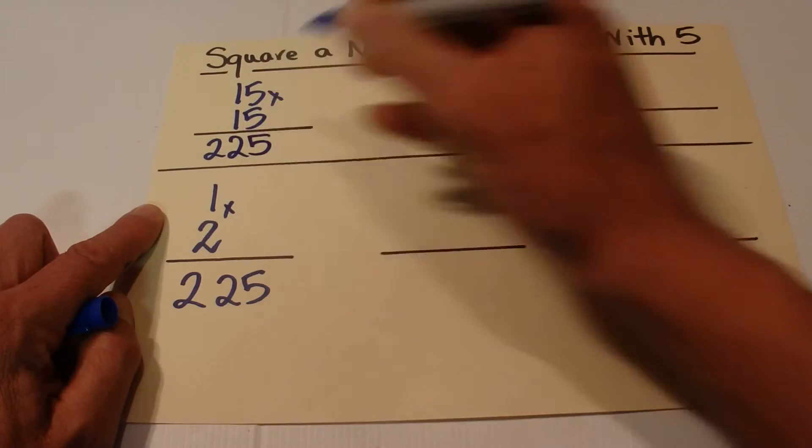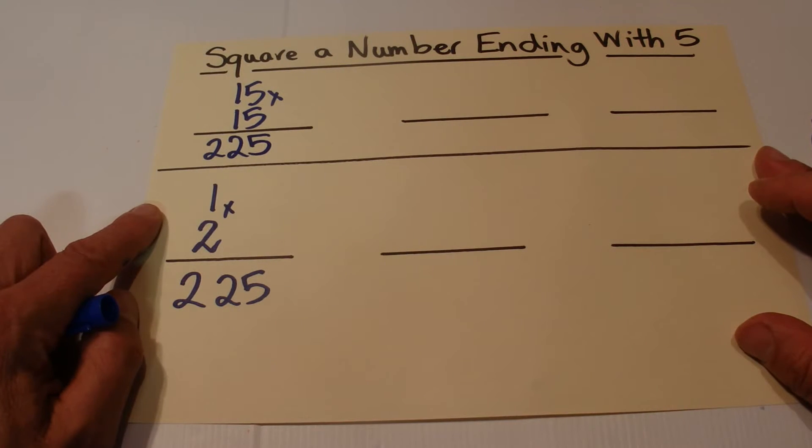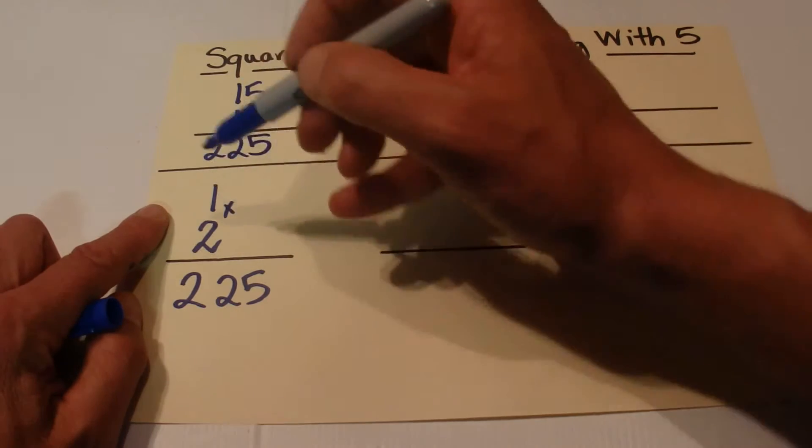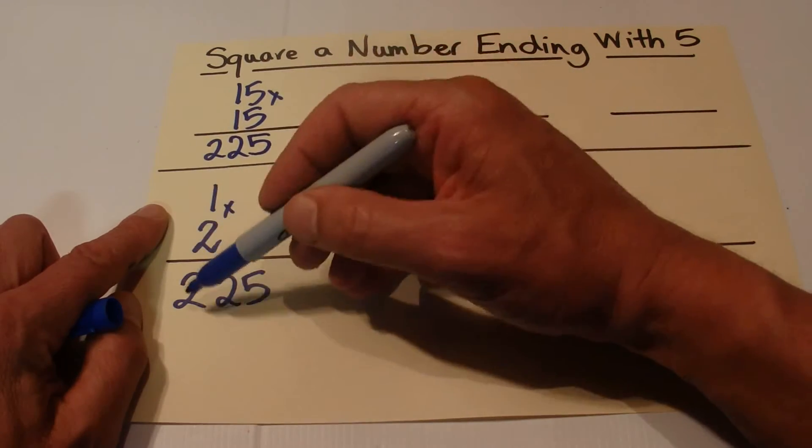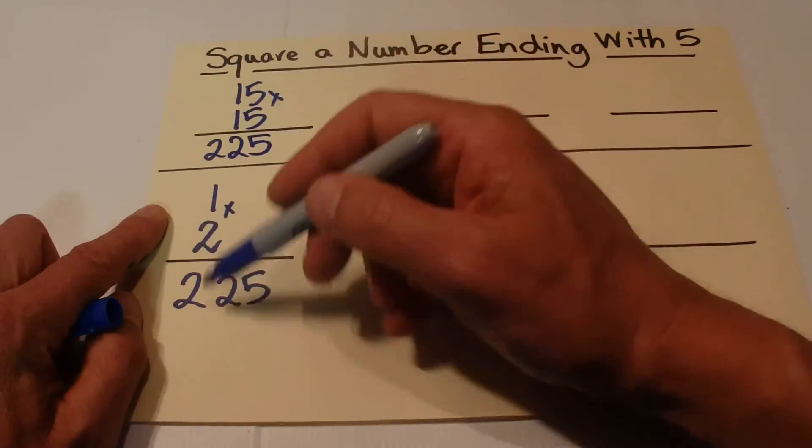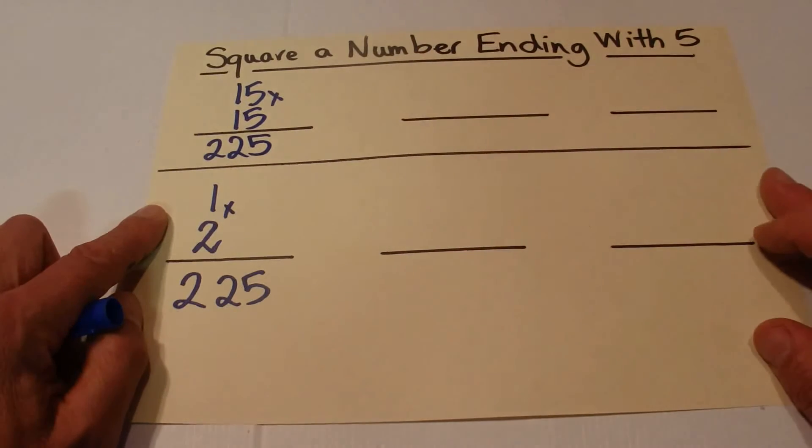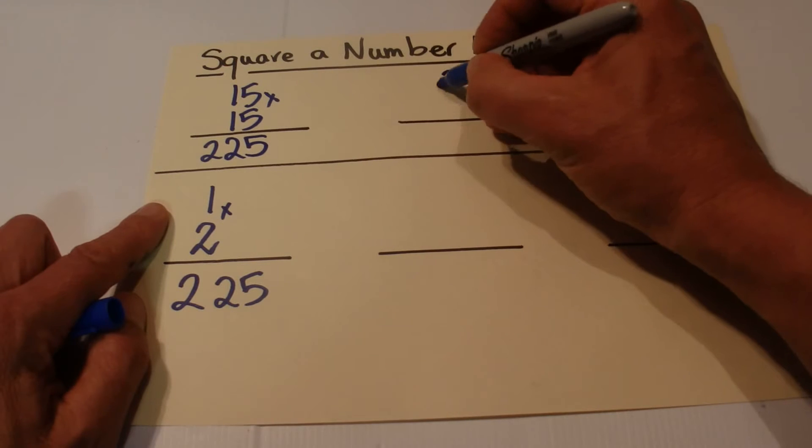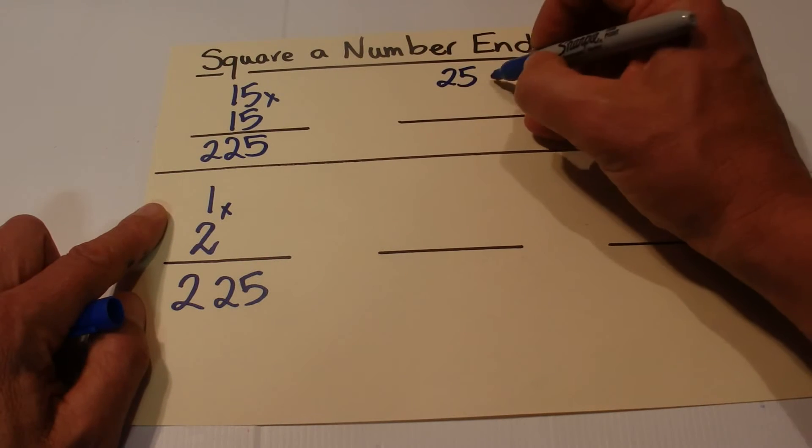Magically, is the answer to 15 times 15. So you take the 1, increase it by 1 and multiply the 2 together, so 1 times 2 is 2, and add 5 times 5 which is 25. Add that on the end and you come up with 225, which is the answer to 15 times 15.